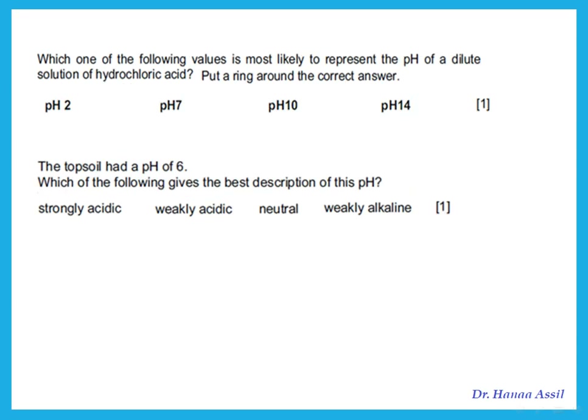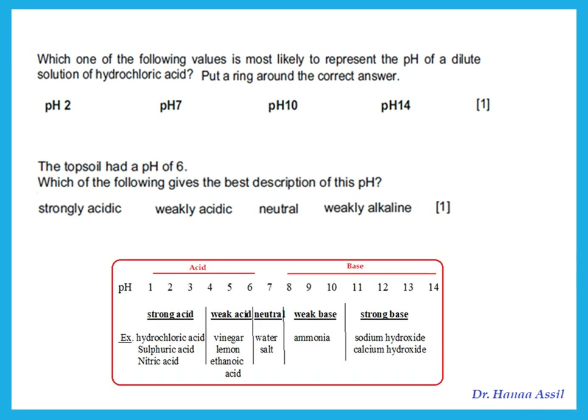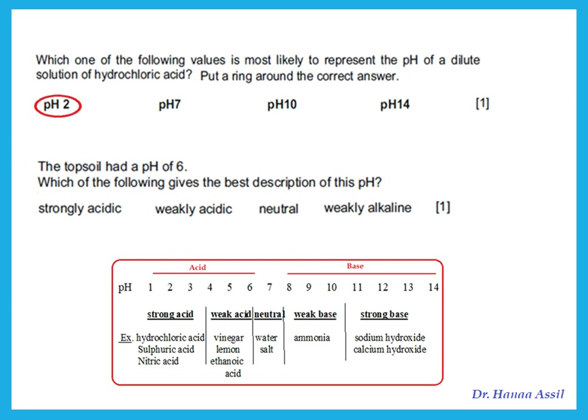Which value is most likely to represent the pH of a dilute solution of hydrochloric acid? Looking at the pH scale, acids are less than 7, but hydrochloric acid is a strong acid, so it would have pH 1, 2, or 3. Therefore, pH 2 is the correct answer.